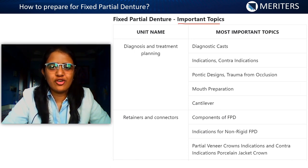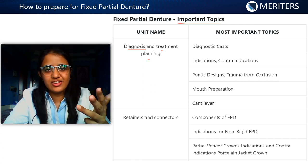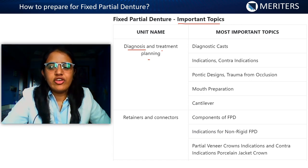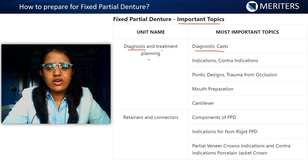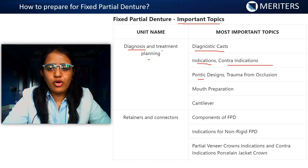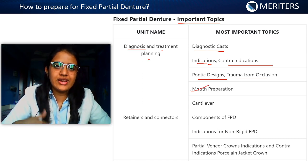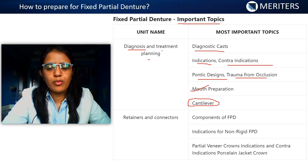The important topics of FPD begin with diagnosis and treatment planning: extraoral evaluation, intraoral evaluation, range evaluation, abutment evaluation, and radiographic evaluation. Also know about diagnostic cast, treatment planning, indications and contraindications of FPD, advantages and disadvantages, pontic design, trauma from occlusion, and mouth preparation modifications. Know the types of FPD, modifications of FPD, and most importantly the principle and concept behind cantilever FPD.